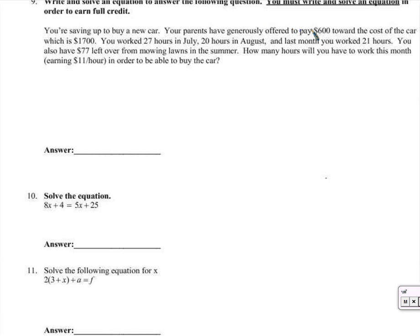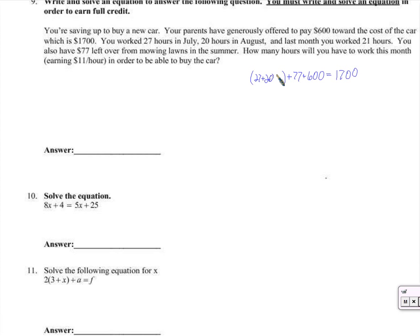We're going to buy a car. We've got some money from mom and dad, some money from work, some money from mowing lawns, and more coming from work — and we want to know how many hours we'd need to work. It sounds like a lot of money has to add up to $1,700. $600 coming from mom and dad, add the $77 left over from lawns over the summer, then add money made from work — we add up all the hours: 27 plus 20 plus 21 — and multiply that by $11 an hour.